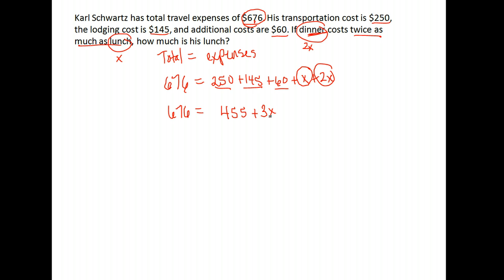We're going to solve this equation. We subtract 455 from both sides. Our goal when solving the equation is to get the variable — in this case X — all by itself. So now we have 3X equals $221.